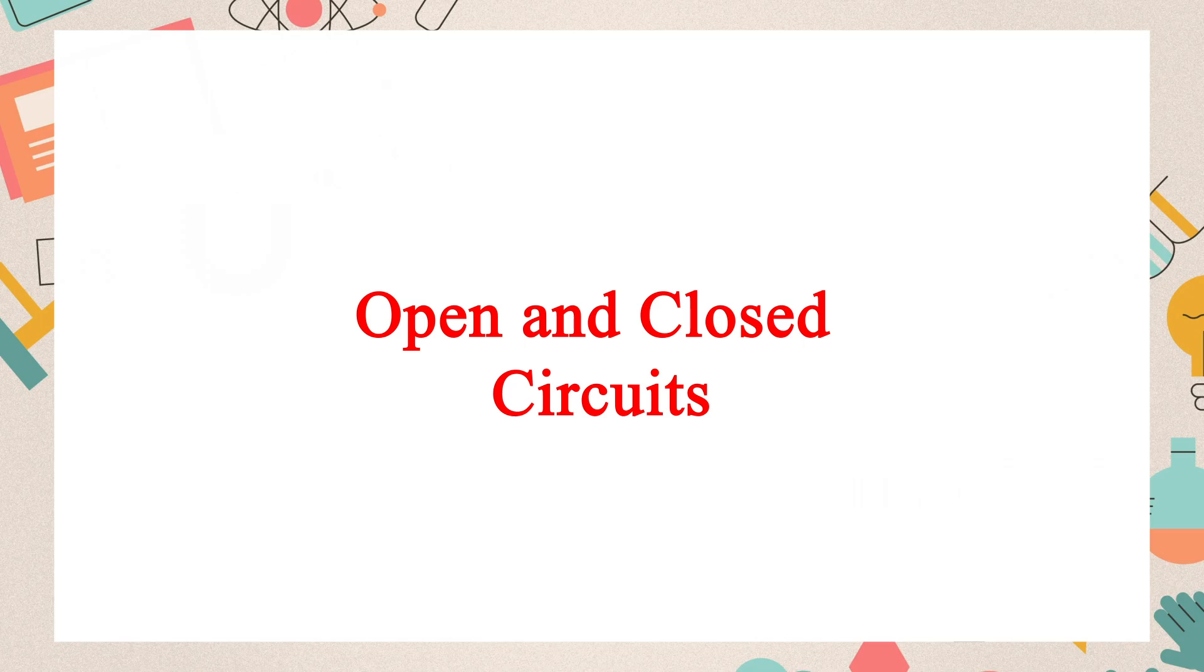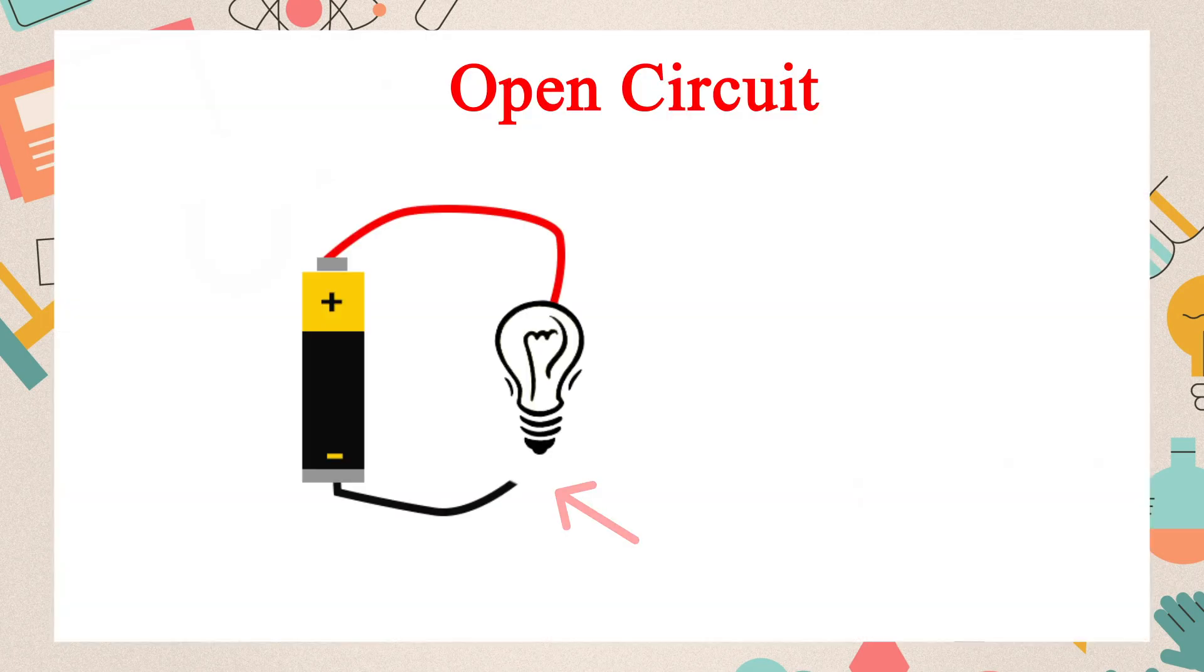Open and closed circuit. If there is any gap in this path or between two terminals of the wires, bulb and cell, the bulb will not light up because the circuit is not complete. This is called an open circuit or incomplete circuit.